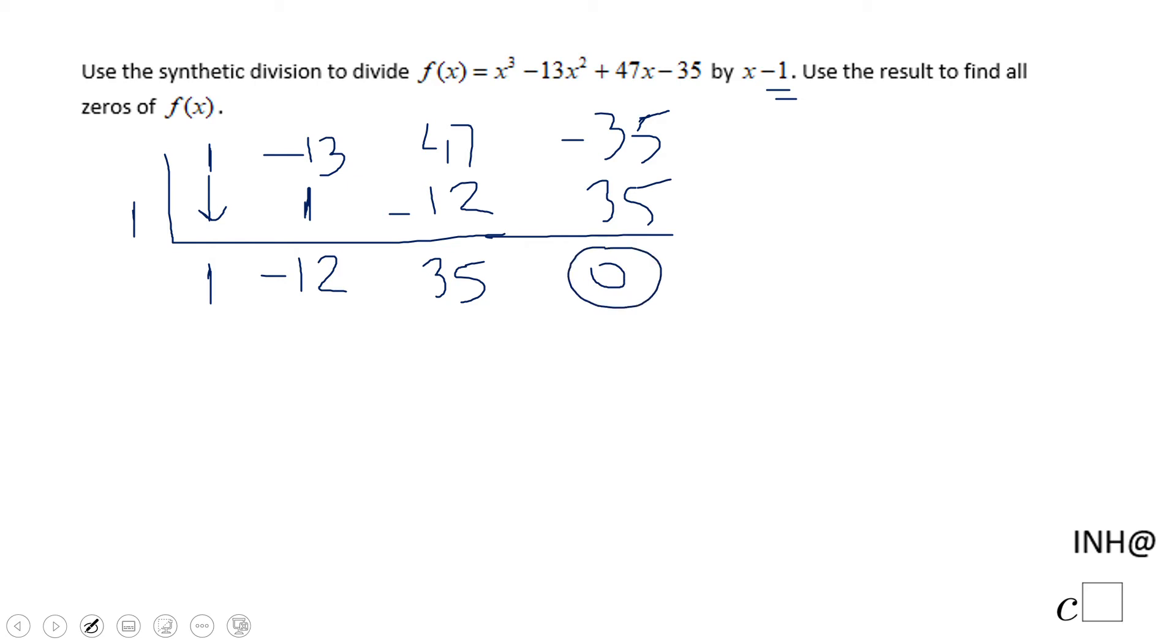We kind of knew that based on how the problem was given to us. So what we have here left is x squared minus 12x plus 35.